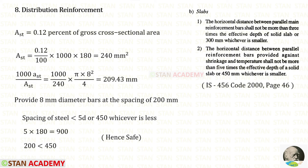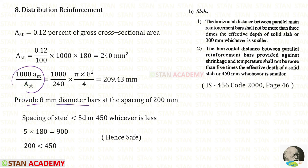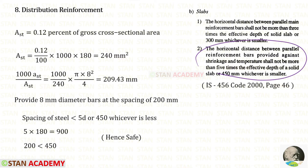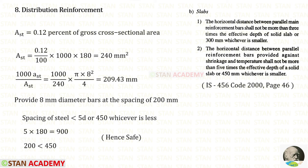Now let us design the distribution reinforcement. For that, we take the minimum area, which we have calculated as 240 millimeter square. We provide 8 millimeter diameter bars. Using the spacing formula, we can find the spacing and round that to 200 millimeter. The spacing of the steel should be less than 5d or 450 millimeter, whichever is less. 5d will be 900, so 450 is less. Our spacing of 200 millimeter is less than 450, so it is safe.